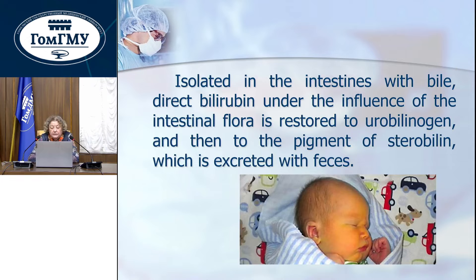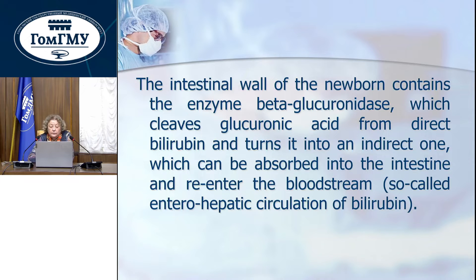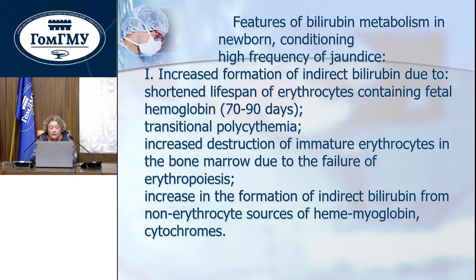Direct bilirubin isolated in the intestine with bile, under the influence of intestinal flora, is restored to urobilin and then to the pigment stercobilin, which is excreted with feces. The intestinal wall of the newborn contains a special enzyme, beta-glucuronidase, which cleaves glucuronic acid from direct bilirubin and turns it back into indirect bilirubin, which can be absorbed from the intestine and re-enter the bloodstream — the so-called enterohepatic circulation of bilirubin.